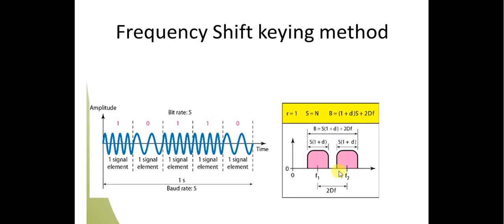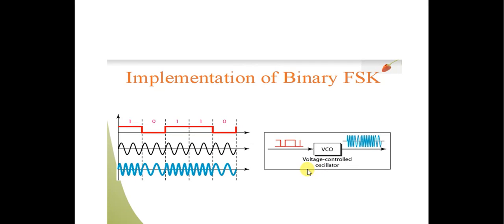For implementation of binary frequency shift keying, we convert digital data into analog. Here is the digital data - it is digital data - and here is the carrier signal.